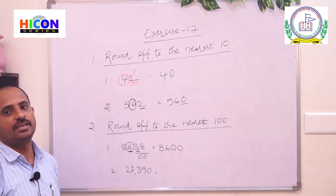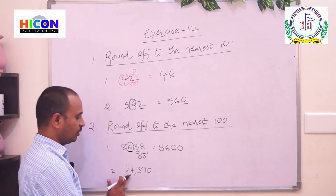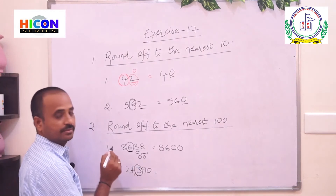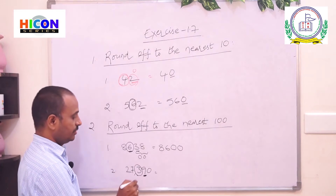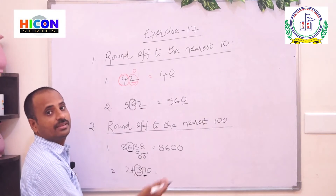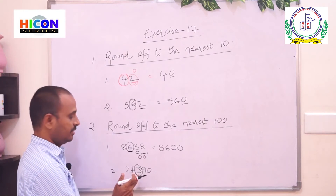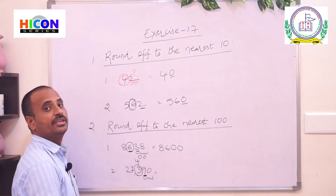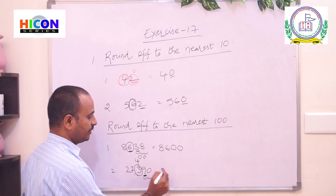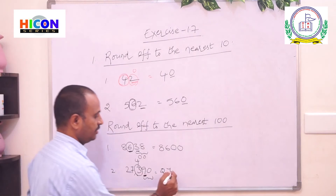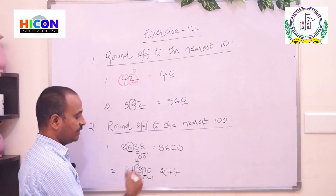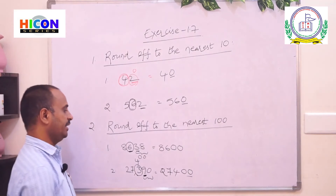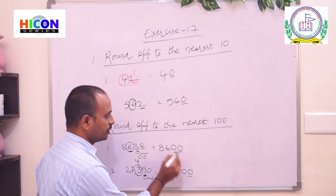The number becomes 8600. Now see the second number, 27390. Identify the digit in the hundreds place — it is 3. Check the next digit: it is 9, which is greater than 5, so write the next hundreds. Here 3 hundreds becomes 4 hundreds. The digits 27 remain unchanged; write 4 as the next hundreds and put 2 zeros after the hundreds place. So the answer is 27400. If any number is rounded to 100, you will get 2 zeros at its last.